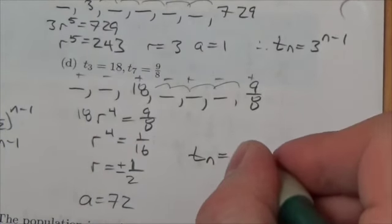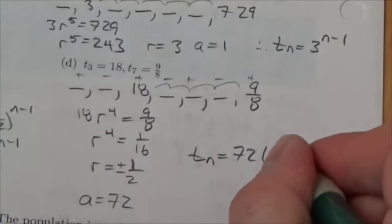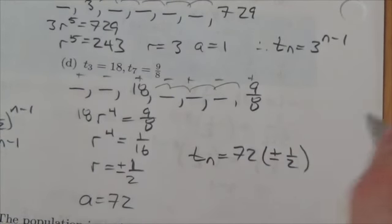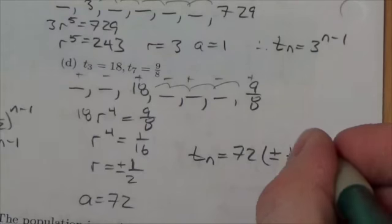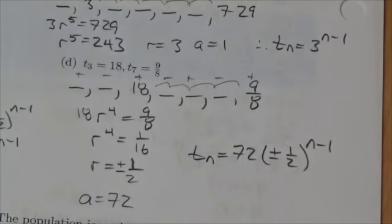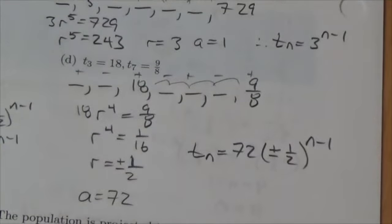So, this means tn, our general term, will equal 72 times, well, I don't know whether that's plus or minus a half, so I'm going to put both down there to kind of sidestep the ambiguity, and that's the general term.